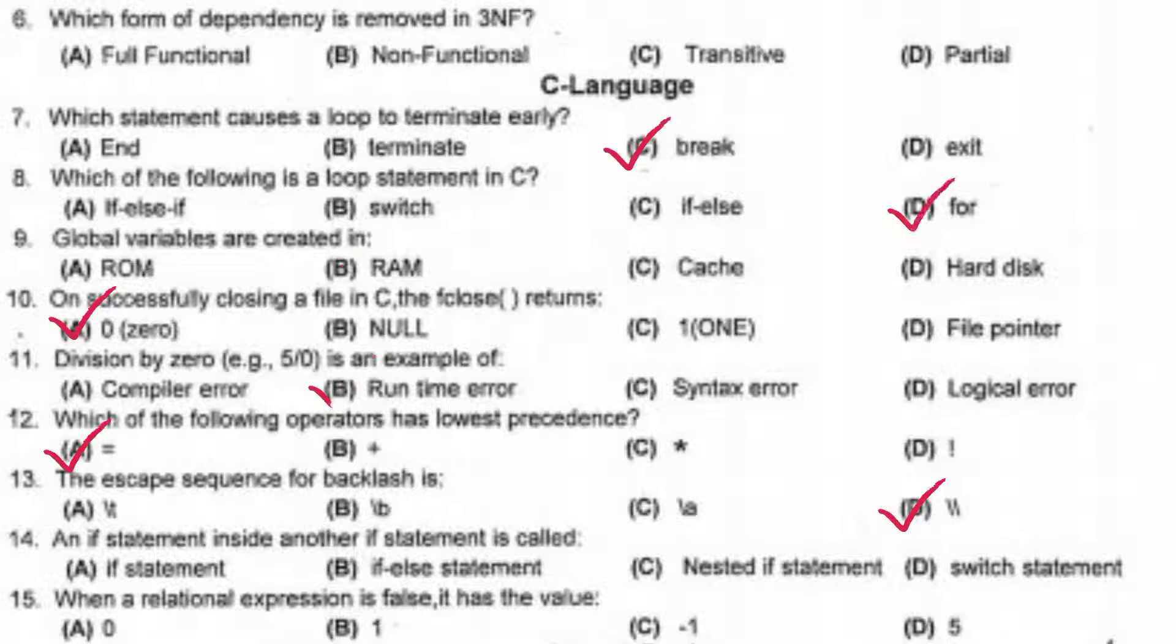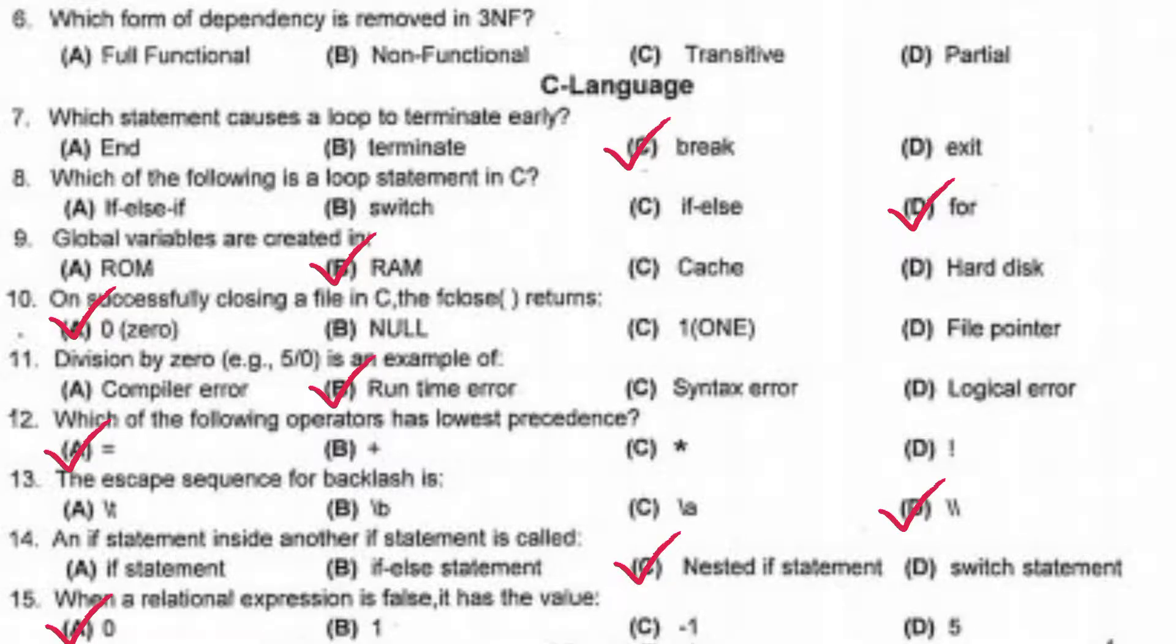An if statement inside another if statement is called nested if statement. When a relational expression is false, it has the value zero. Arithmetic manipulation of data is known as summarizing and attribute is also known as field.